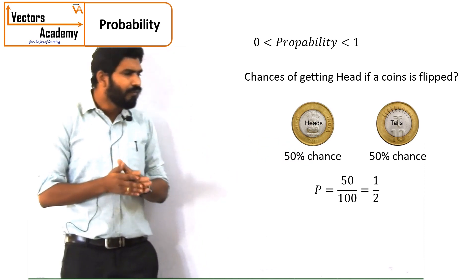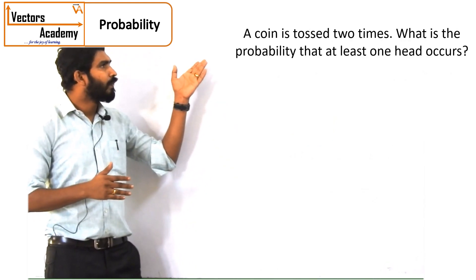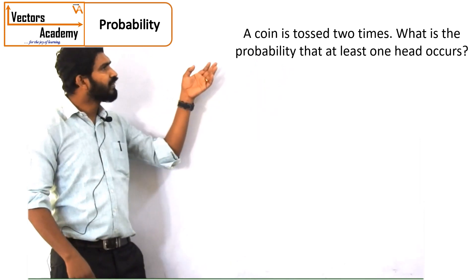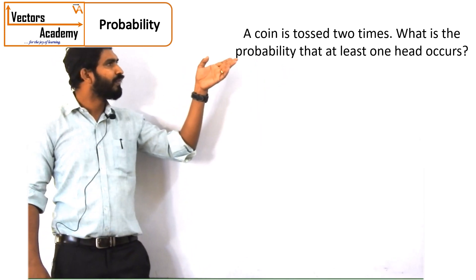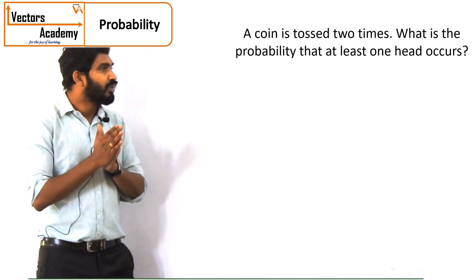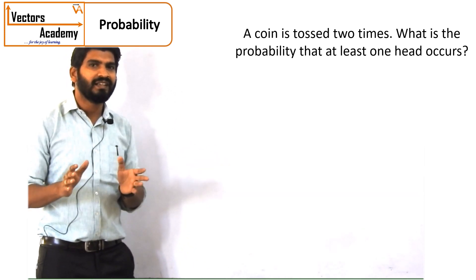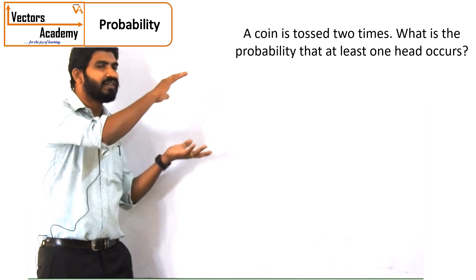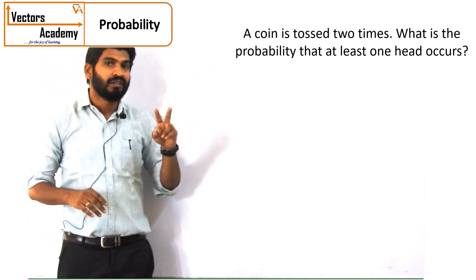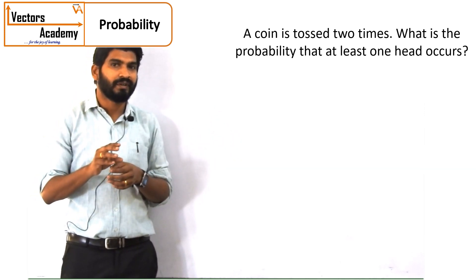Now we will look at some more complicated questions. If I look at this question: a coin is tossed twice. What is the probability of getting at least one head? In this question, we will look at a few more terms — how exactly the question is represented.